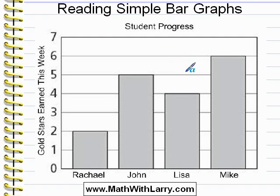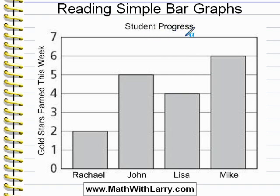Here we have a simple bar graph, or you could call it a bar chart. Let's take a look at what this chart is showing us. First of all, we always want to look at the title, which is typically at the top. In this case, the title is Student Progress. We don't know exactly what that means, but obviously it will show us something about what some students are doing.